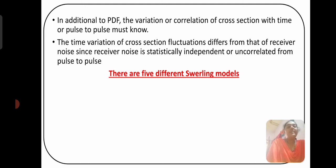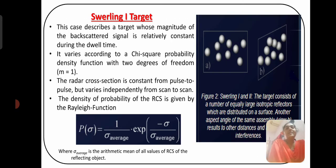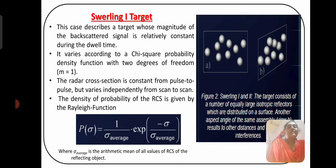There are five different Swerling models to identify the radar cross-section fluctuations. Swerling Case 1 describes a target whose magnitude of back-scattering signal is relatively constant during the dwell. It varies according to the chi-square probability density function with two degrees of freedom. The radar cross-section is constant from pulse to pulse but varies independently from scan to scan. The probability density of RCS is given by the Rayleigh function: P(σ) = (1/σ_avg) × exp(−σ/σ_avg), where σ_avg is the arithmetic mean of all RCS values of the reflecting object.